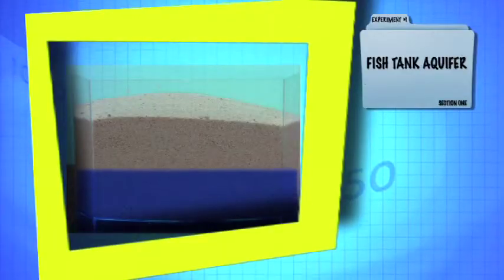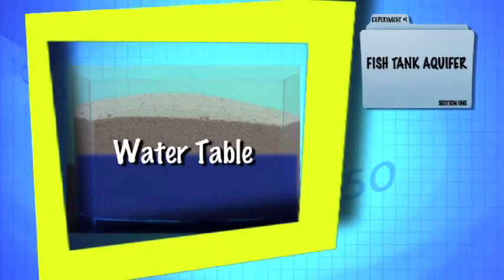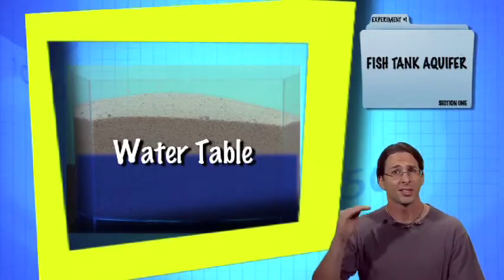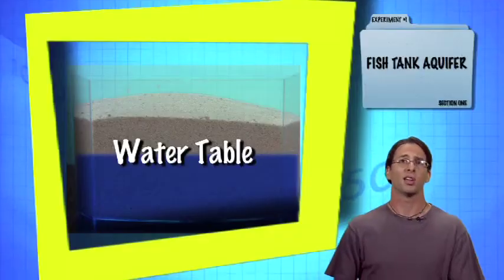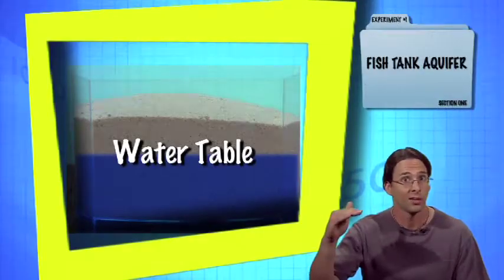The very top of the water in an aquifer is called the water table. Why would we bother to name it? We don't rely on swimming pool water to drink, but we do rely on aquifer water for our drinking water. Since aquifer water is our only water source, we want to know if it's rising or falling. So we are very interested in water table changes.